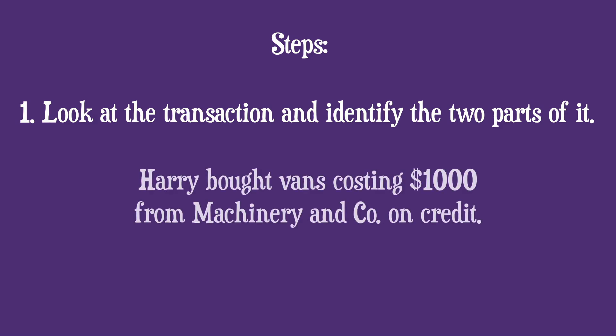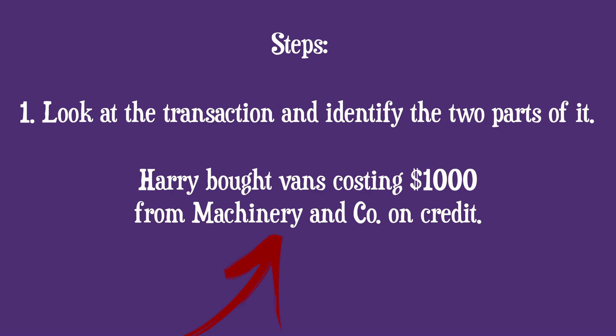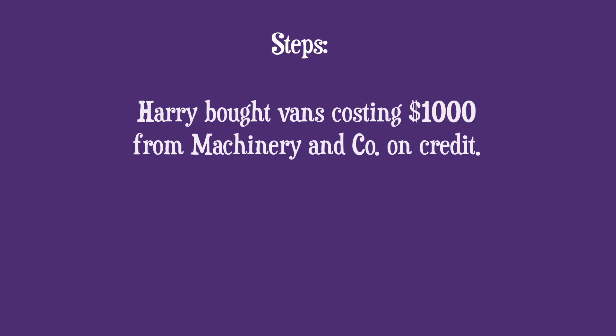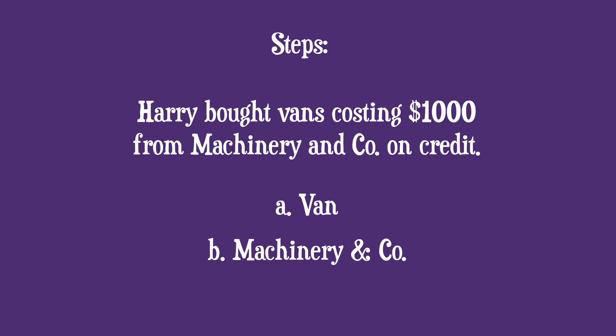For example, the transaction is: 'Harry bought machinery costing $1,000 from Machinery & Co on credit.' The first step is to divide this into two parts. The first part: Harry has bought machinery for $1,000. The second part: he bought it from Machinery & Co on credit — meaning he didn't pay immediately and agreed to pay later. 'On credit' always means payment will happen later, not now.